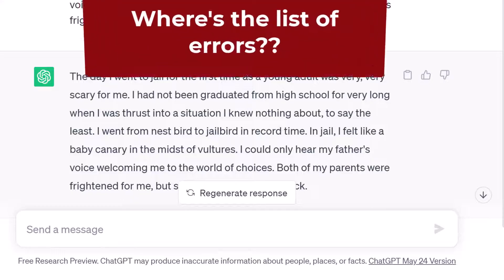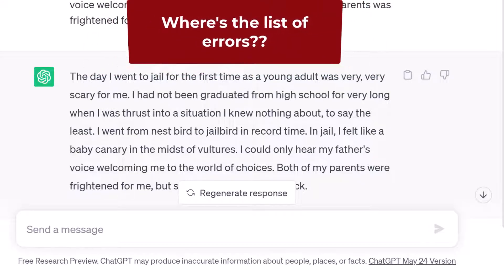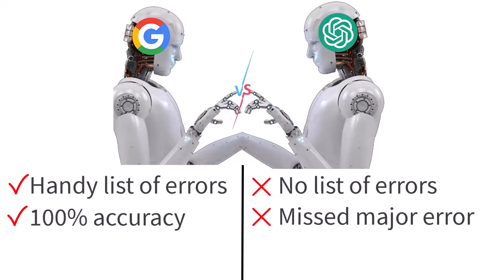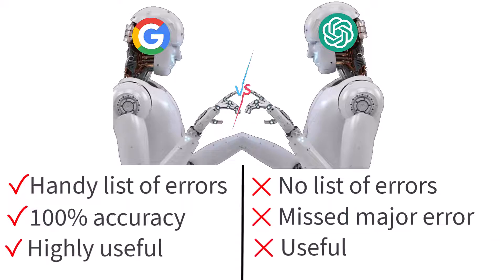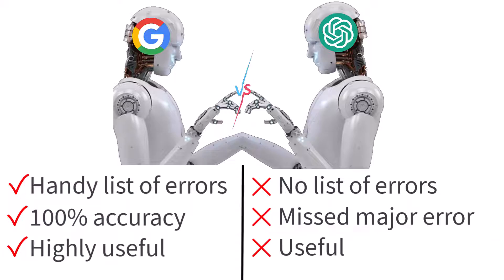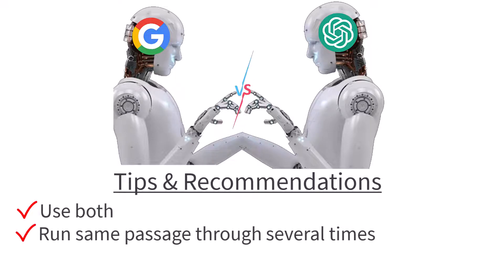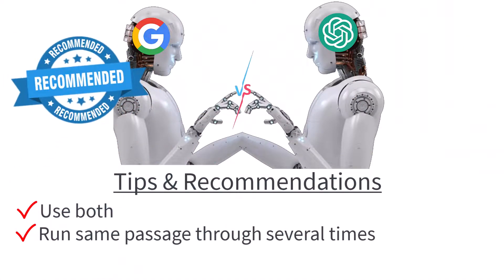Also missing is that handy list of corrections that Google's BARD suggests. This lack, as well as the failure to correct a major error, makes ChatGPT less useful as a proofreading tool. As a result, I highly recommend using suggestions from both BARD and ChatGPT. Try writing the same passage through several times in ChatGPT and Google BARD and you will receive additional suggestions. Although using both is ideal, if you have time for only one, I recommend Google's BARD for its accuracy and more detailed feedback.